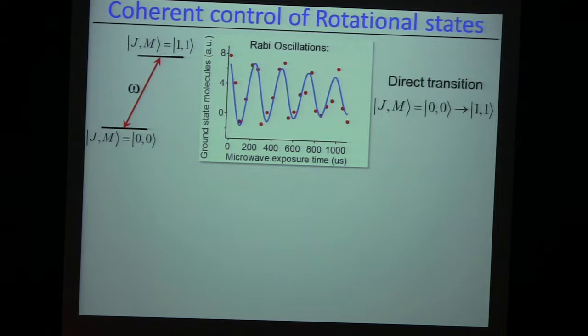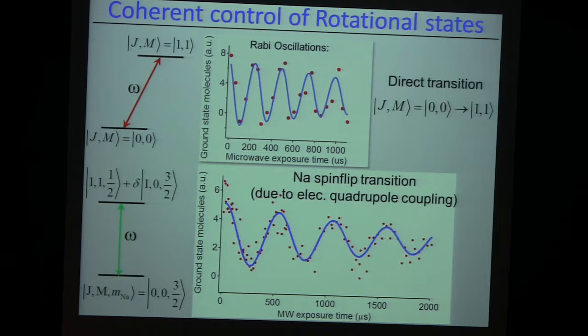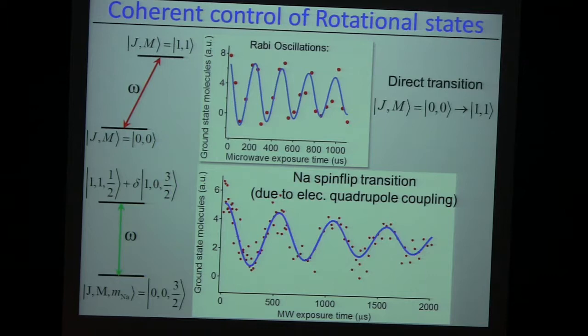Usually you can do this by projecting out a certain sub-class of molecules in the right state, and then you see Rabi oscillations on that. But here we do the Rabi oscillations of the entire sample. Same with this spin-flip transition where you go from predominantly three-halves nuclear state to a different one-half nuclear state — which seems not allowed, but it is allowed because of this strong mixing in the excited state of nuclear spin and rotation. All these things have been demonstrated much earlier for KRb. It just works the same way for NaK.